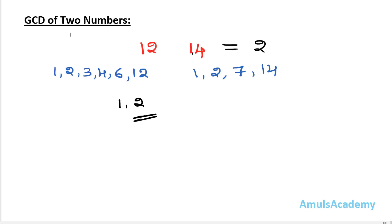GCD is also called HCF, which stands for highest common factor — both are the same. To find the GCD of two numbers: first find the divisors, next pick the common divisors, and then find the greatest common divisor.